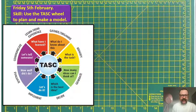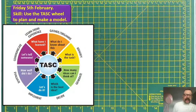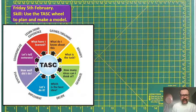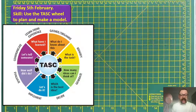We're going to be designing something, and if you've looked at the skill, we're going to be making a model — or you are going to be making a model. So how's the task wheel going to help us? I'm not sure if some of you may have come across the task wheel before. I use it a lot. I use this at home as well. If I'm making anything, I run through this wheel. It organises my brain.